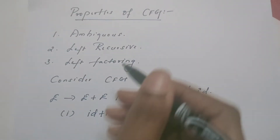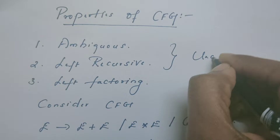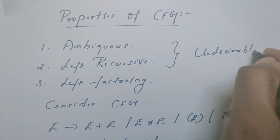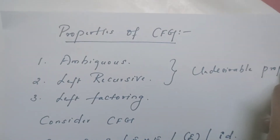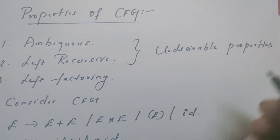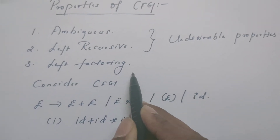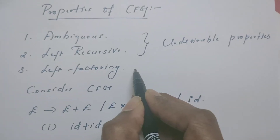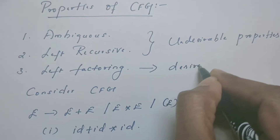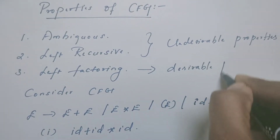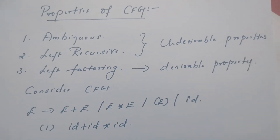Out of these three properties, the first two are undesirable properties. If the grammar is ambiguous, we need to eliminate ambiguity. If the grammar is left recursive, we need to eliminate the left recursion. If it is possible to left factor, then we can do it. So the third property is a desirable property for context-free grammar — in fact, it is desirable for parsing.